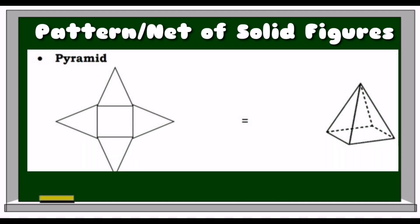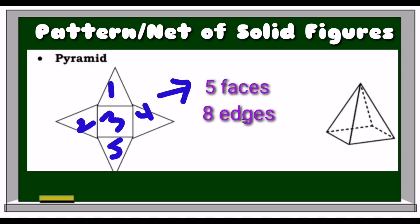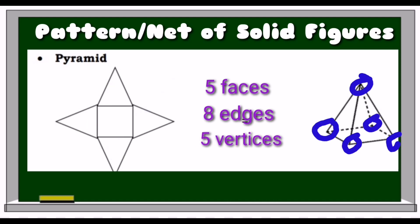The third net or pattern is for pyramid. A pyramid has 5 faces, 8 edges, and 5 vertices.